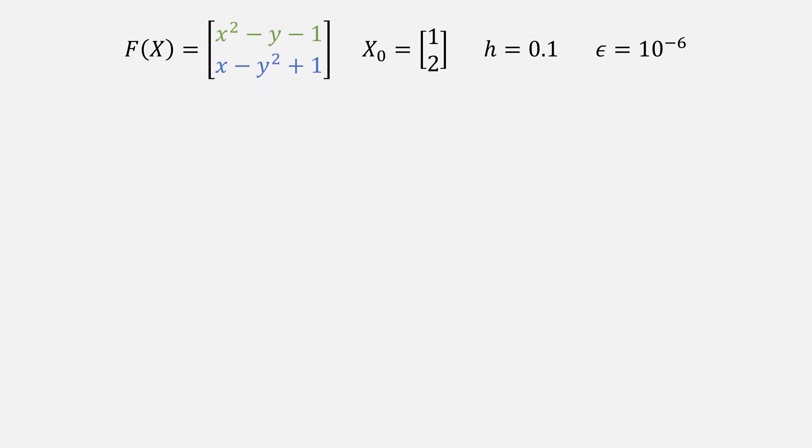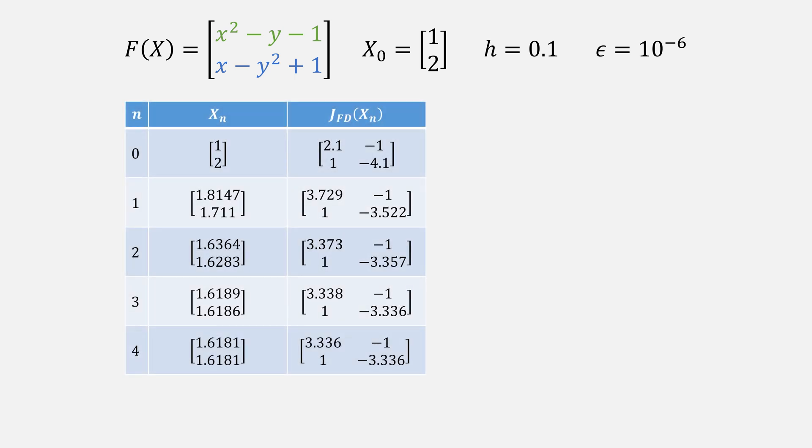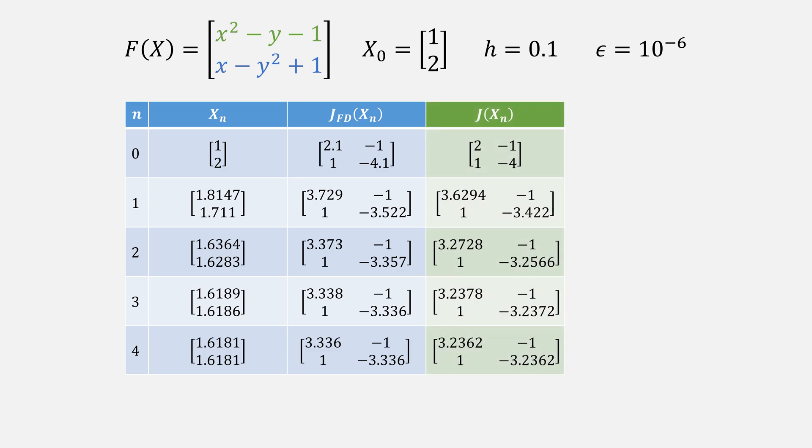Let's look at a numeric example, starting from the point (1,2), with the value of h of 0.1. These are the first several iterations of finite difference method, and the Jacobian that we approximate using that method. Let's compare that to the actual Jacobian. Notice that for every step, we get something that's actually very close.